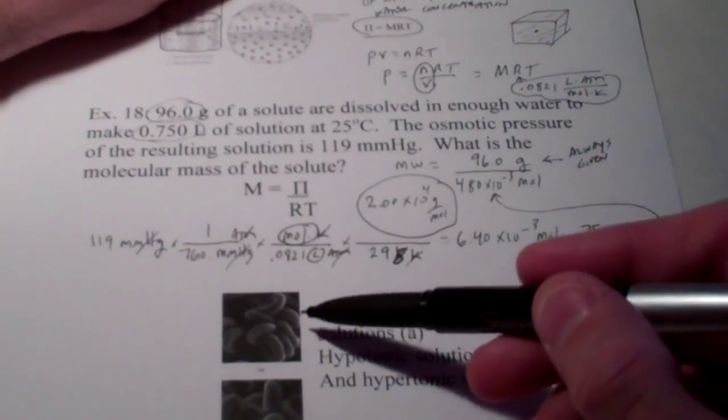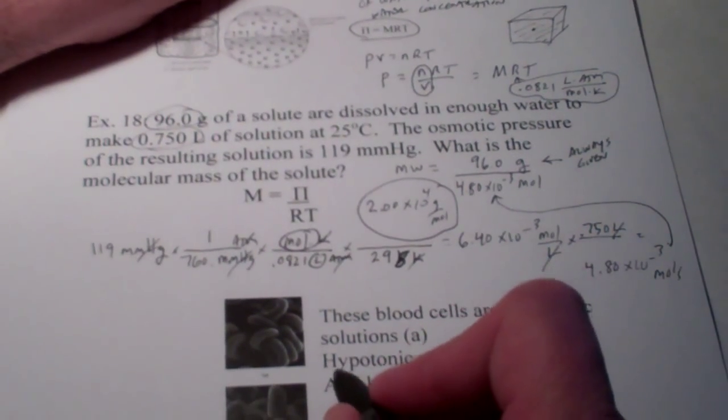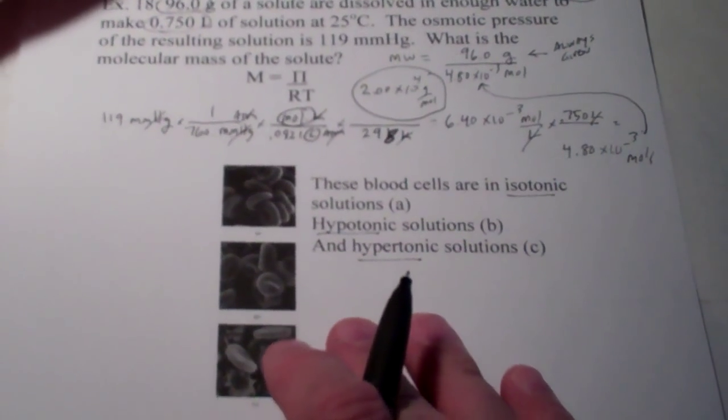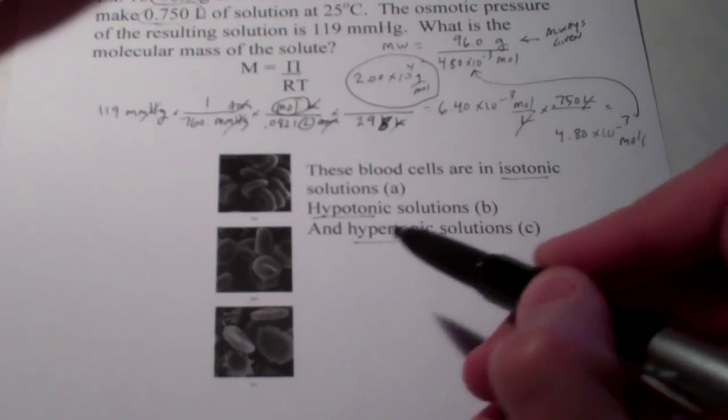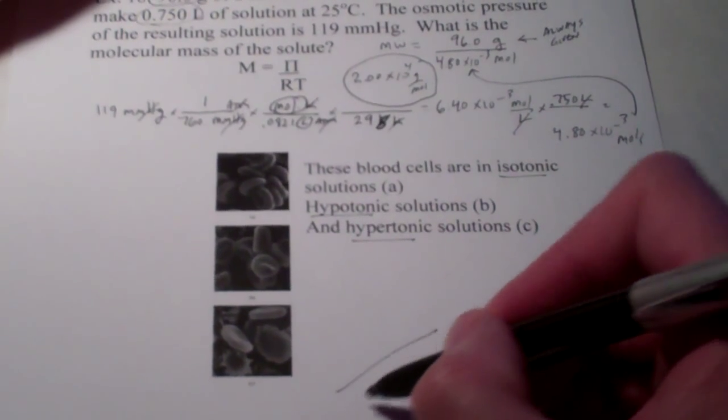Okay, there's a little picture on the bottom of your notes. It's showing blood cells and something called an isotonic solution, a hypotonic solution, a hypertonic solution. I want you to take the time to look up those vocabulary terms on your own and see how it applies to the image in your notes. Okay?